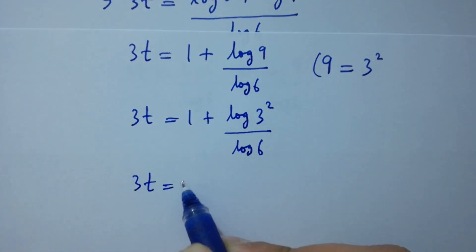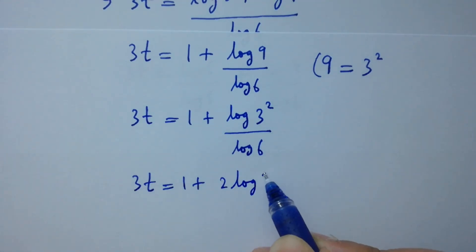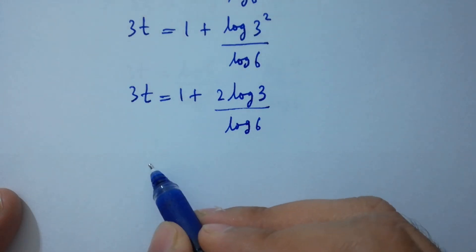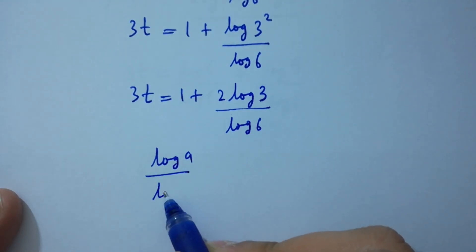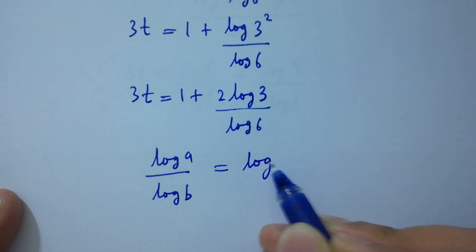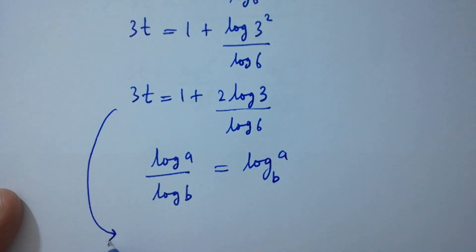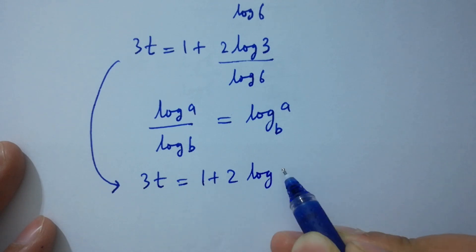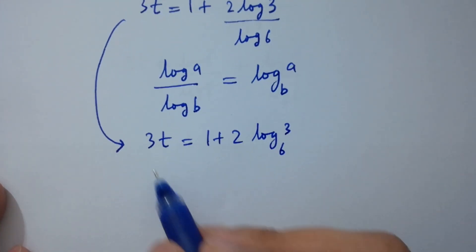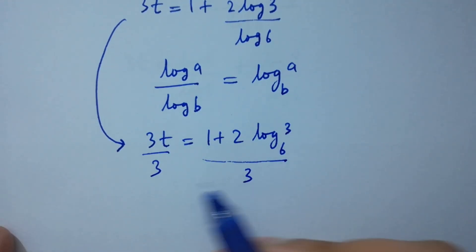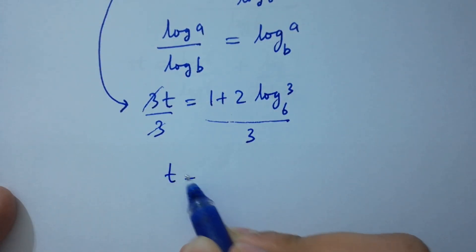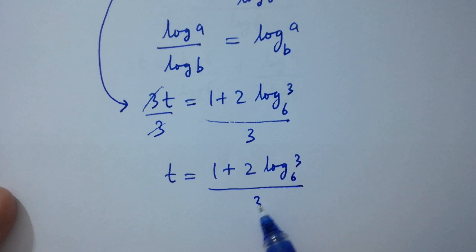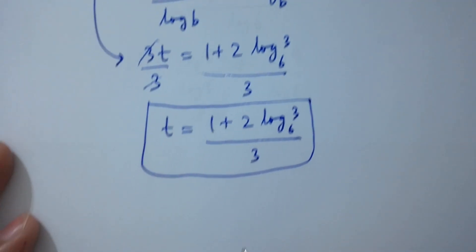Since log 9 equals 2 log 3, we have 3t equals 1 plus 2 log 3 over log 6. As log a over log b equals log a to the base b, we get 3t equals 1 plus 2 log 3 to the base 6. Dividing both sides by 3, t equals (1 plus 2 log 3 to the base 6) over 3.